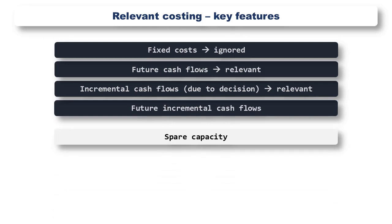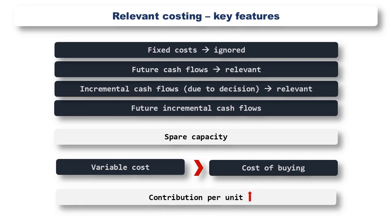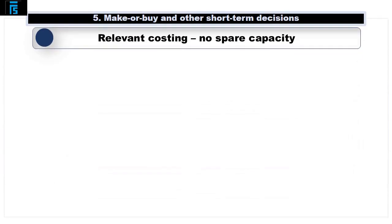Where there is spare capacity, it will usually make financial sense to make products in-house, as the variable cost of making will usually be lower than the cost of buying in a ready-made product. If, however, the cost of buying in does happen to be lower than the variable costs of manufacture, we would of course opt to buy in, as this will increase our contribution per unit and therefore our overall profit. Where there is no spare capacity and we are not meeting demand, we then need to consider which products we should make in-house and which we should buy in. To cover the technique we need to use, we are going to run through a numerical example.